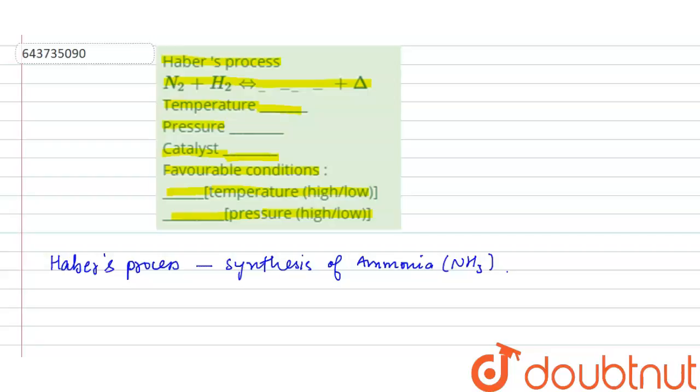By the reaction of nitrogen and hydrogen. So the reaction takes place as N2 plus H2 will give NH3.